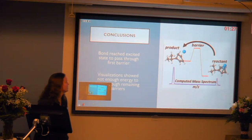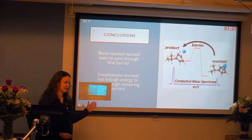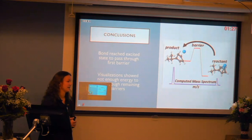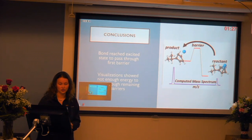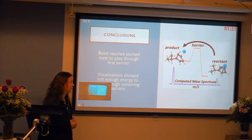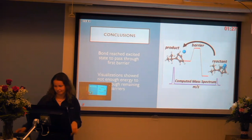Our conclusions: the bond reached this excited state and passed through the first barrier fairly easily. The second barrier was a bigger challenge — the visualization showed there was not enough energy to pass through that remaining barrier, so it was converted back into a bond and proceeded in the reverse direction.